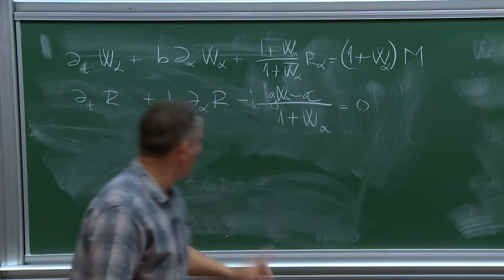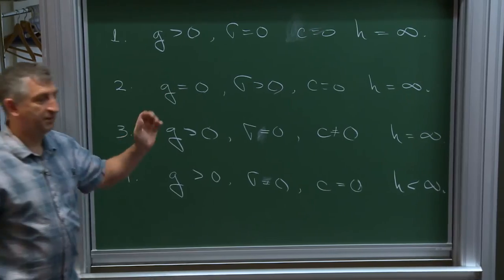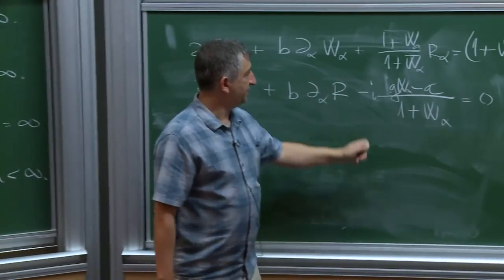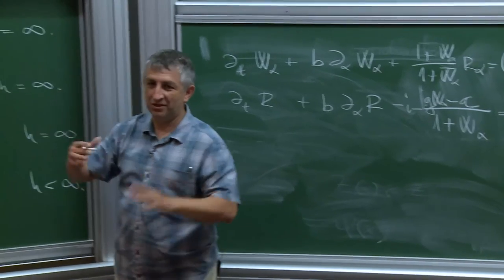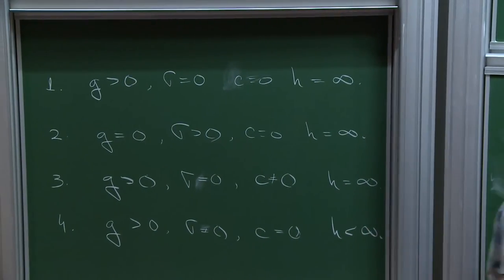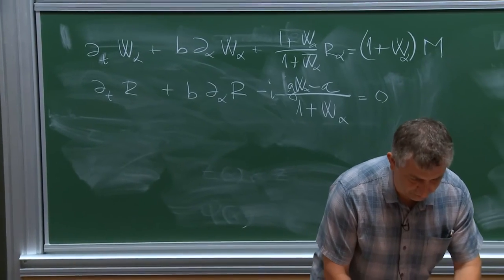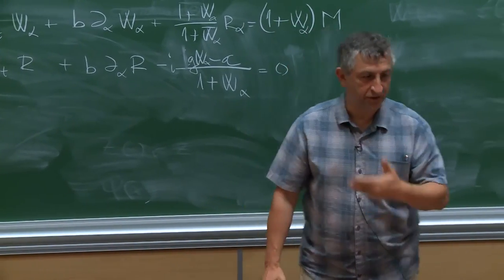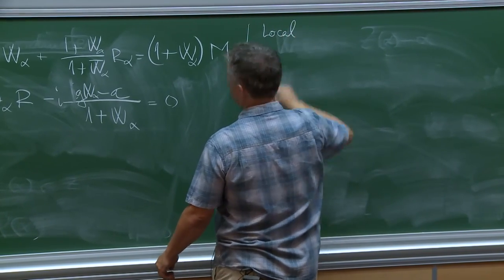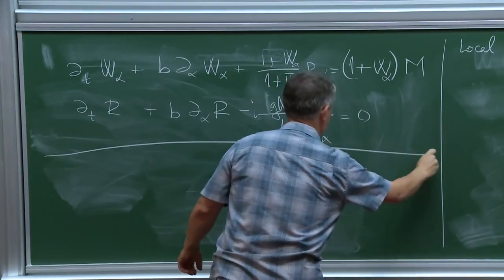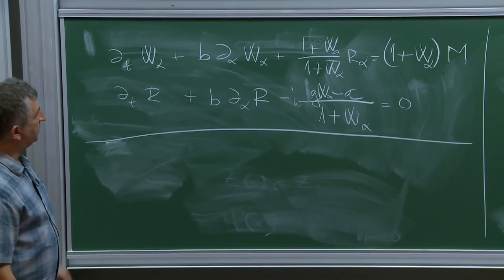Now I'll give you some idea about local well-posedness theory. But first I need to say a little about function spaces and what is the energy for this system. The energy is the integral of w squared times (1 plus real part of w_alpha) plus the imaginary part of q_alpha_bar. Two comments: there is a corresponding energy in Eulerian coordinates; this energy, as discovered by Zakharov, plays the role of the Hamiltonian for the system.